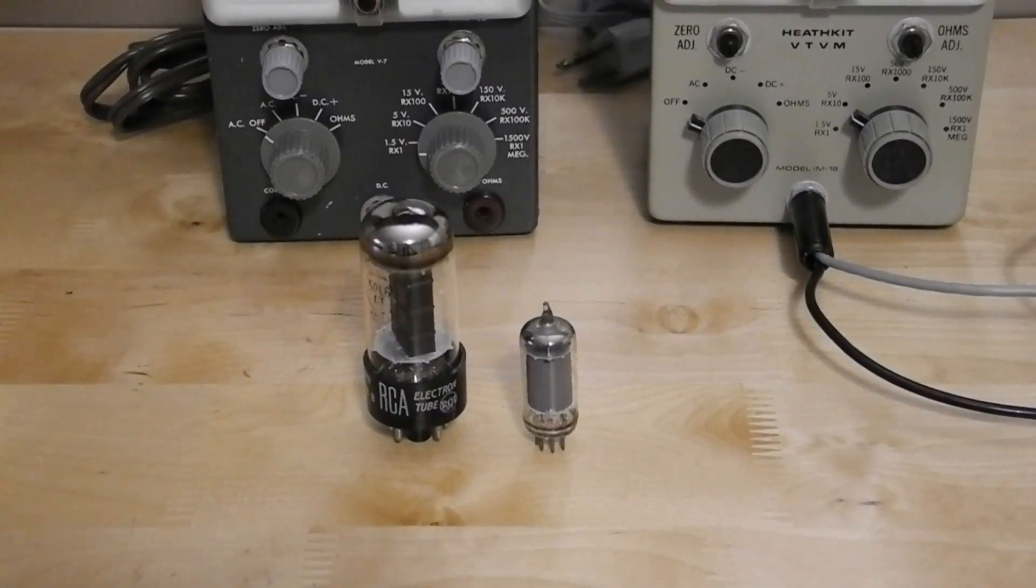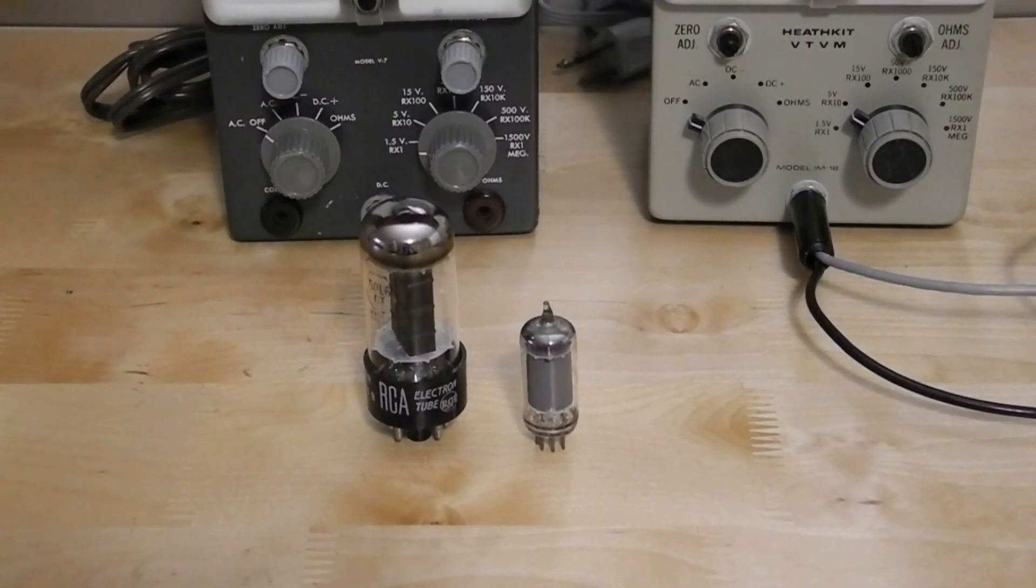The introduction of vacuum tubes offered a solution. Vacuum tubes are essentially voltage control devices, and only a very small input current is needed to control the flow of current in the output. By using a vacuum tube amplifier to drive a meter, the input resistance can be made very high, typically 10 million ohms over all the input ranges. This minimizes the loading effect on the circuit.